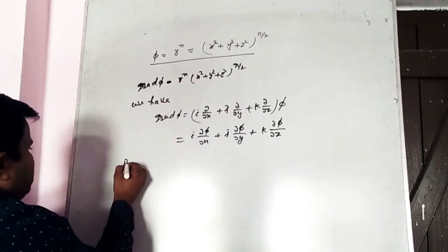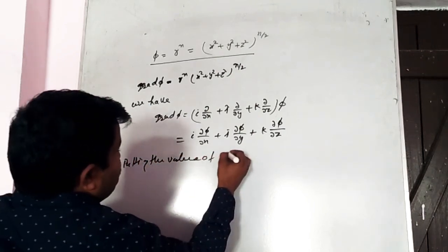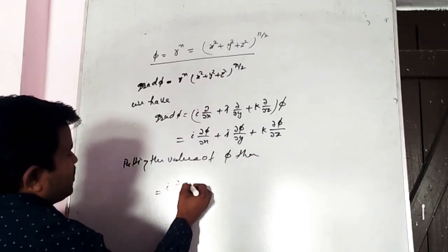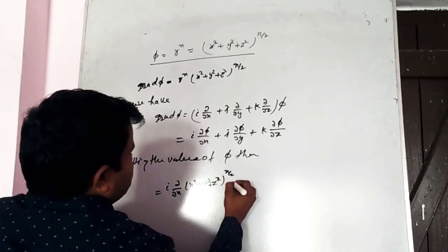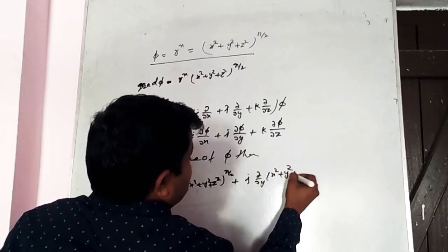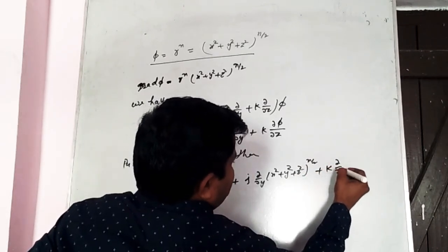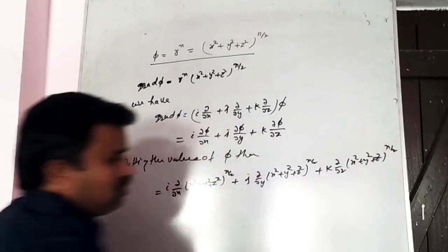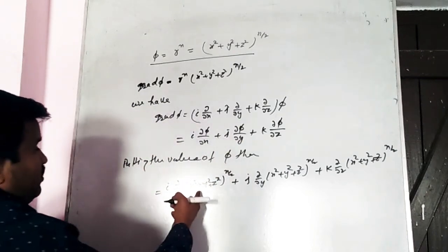Putting the value of φ = (x² + y² + z²)^(n/2): i ∂/∂x[(x² + y² + z²)^(n/2)] + j ∂/∂y[(x² + y² + z²)^(n/2)] + k ∂/∂z[(x² + y² + z²)^(n/2)]. Differentiating partially with respect to x, y, and z: